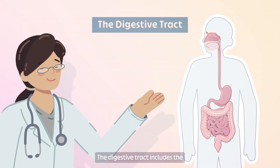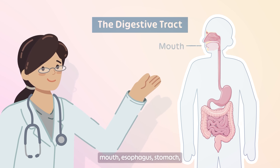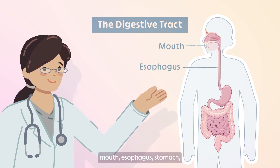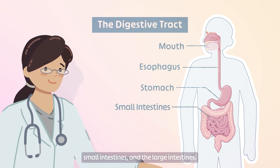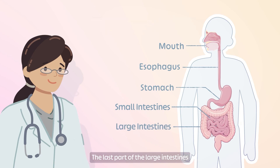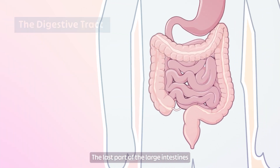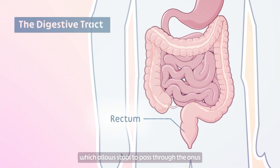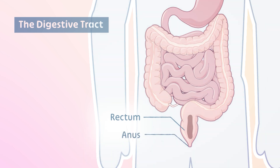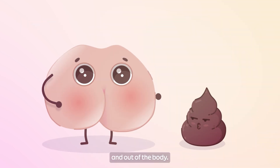The digestive tract includes the mouth, esophagus, stomach, small intestines, and the large intestines. The last part of the large intestines is the rectum, which allows stool to pass through the anus and out of the body.